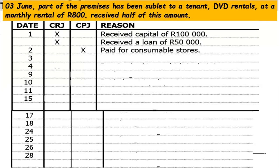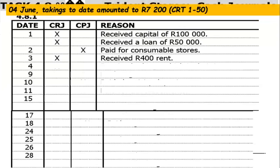On the third of June, part of the premises was sublet to a tenant — DVD Rentals — at a monthly rental of 800 rands. They received half of this amount, which is 400 rands, so it's money received and goes in the Cash Receipt Journal. On the fourth of June, takings to date amounted to 7,200 rands — cash register tape 150 — so that's money received and goes in the Cash Receipt Journal.